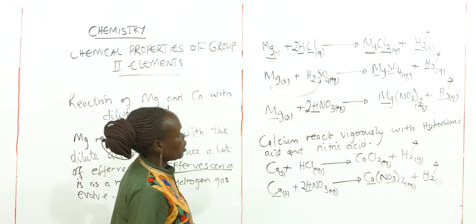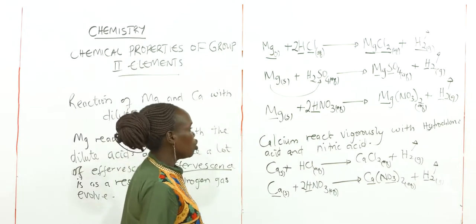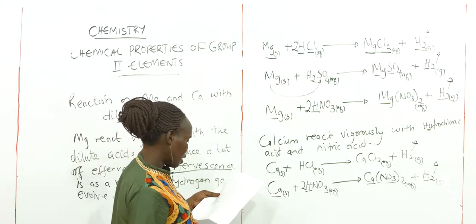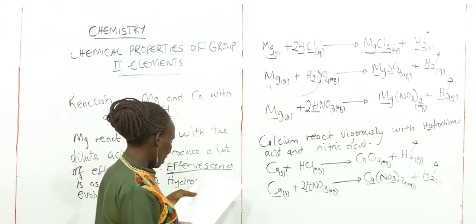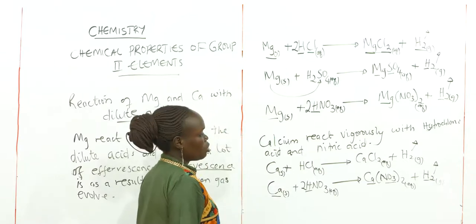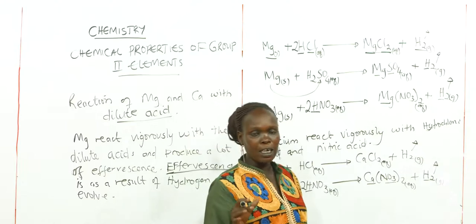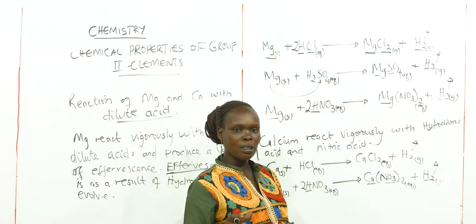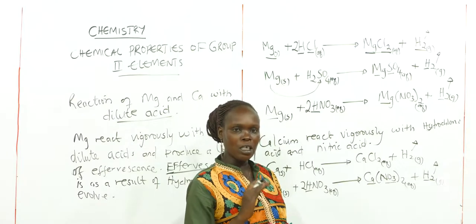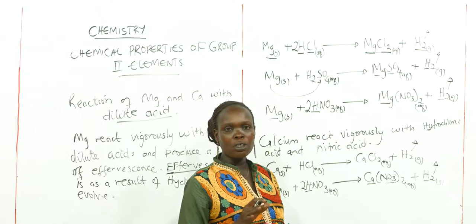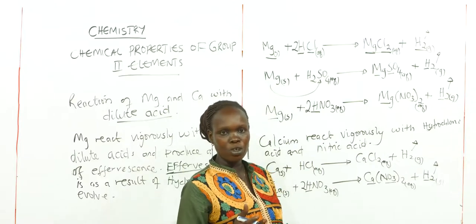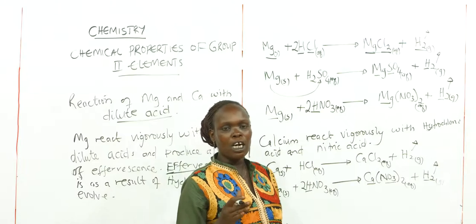What about calcium with sulfuric acid? Calcium metal reacts with dilute sulfuric acid — it starts and then quickly stops. This is because an insoluble calcium sulfate coating forms on the surface of the calcium metal, preventing any further reaction with the acid.